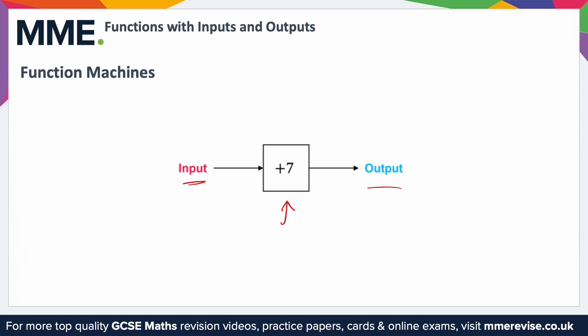So for example if we wanted to input 5, you would add 7 and then you get an output of 12. This is function machines in their most basic form.